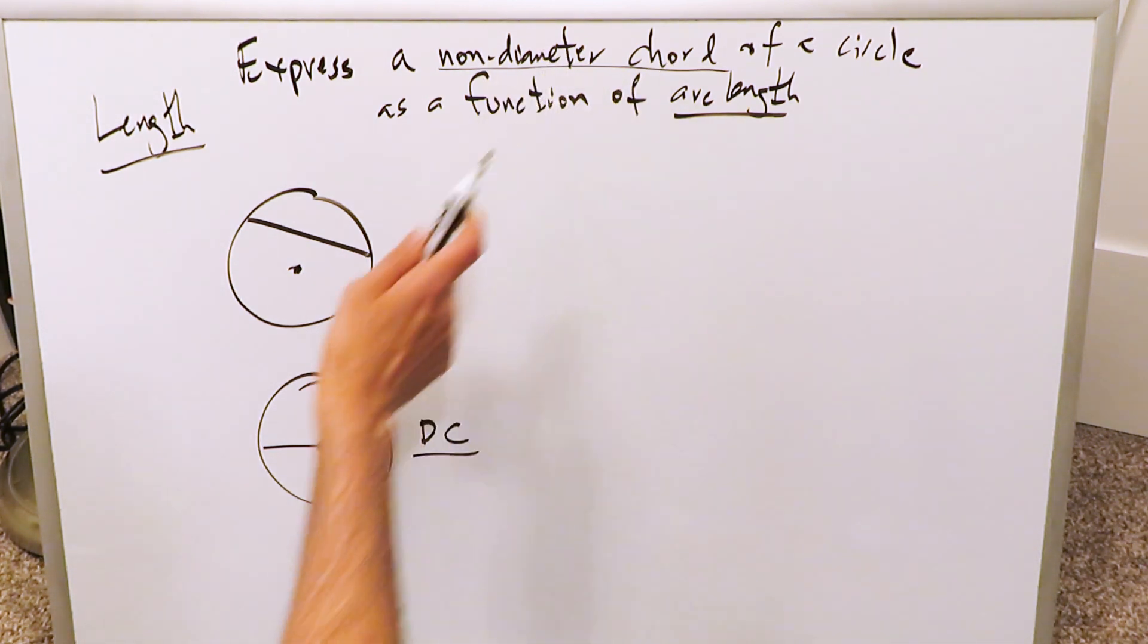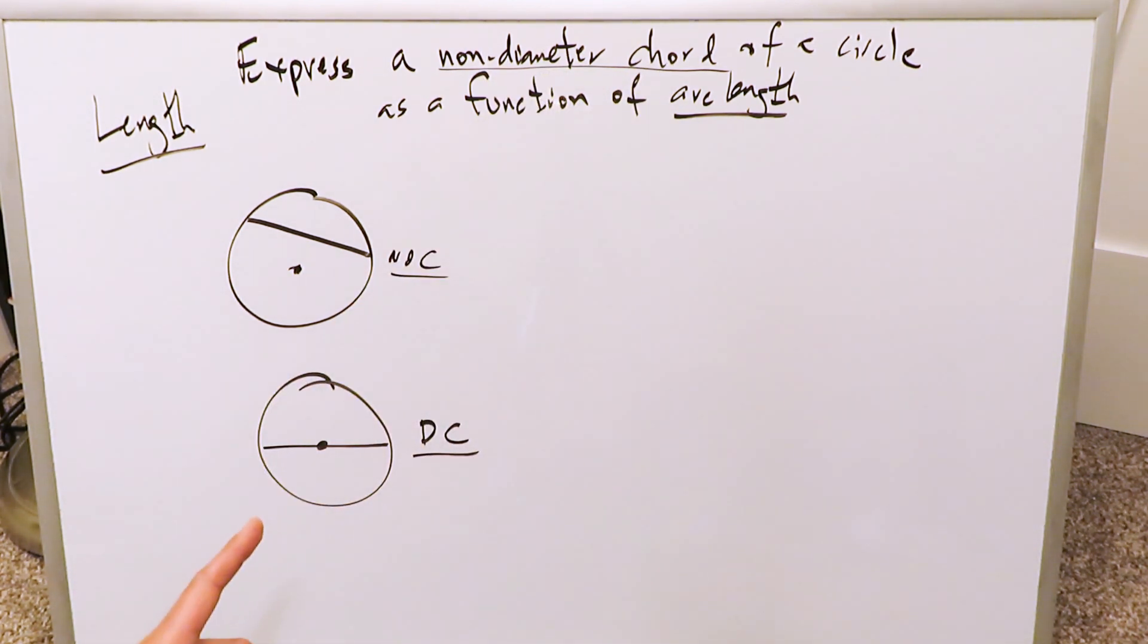What's a chord and what's a non-diameter chord? A chord is any segment which goes from one side of the circle to the other side. If it goes to the center of the circle, that chord is called a diameter chord. It's also a diameter. You can just call it a diameter.